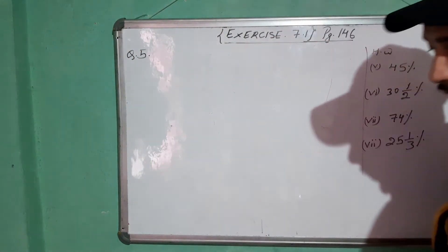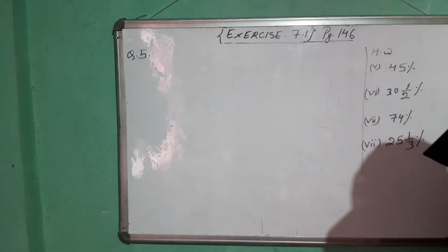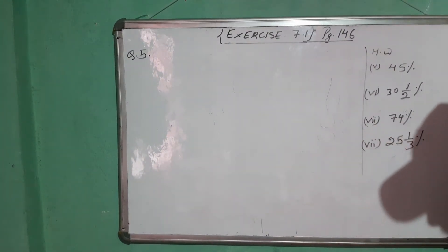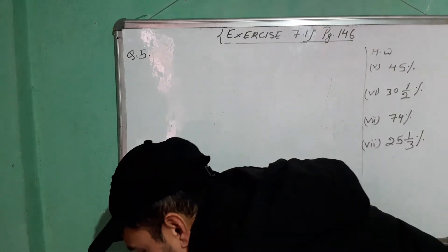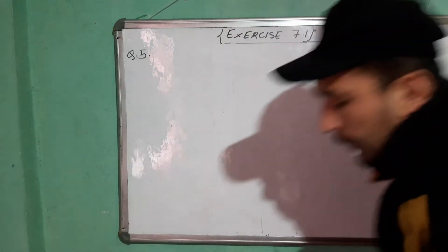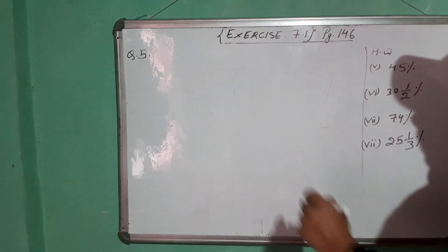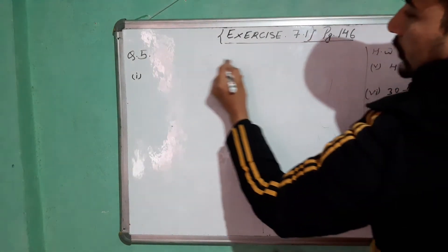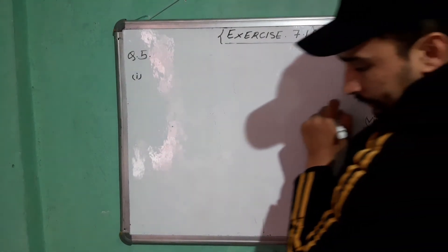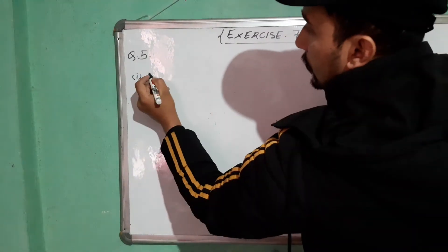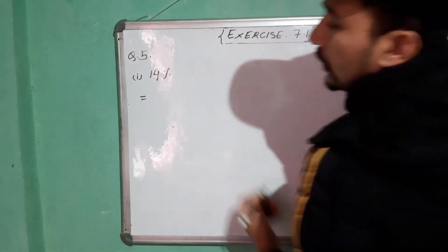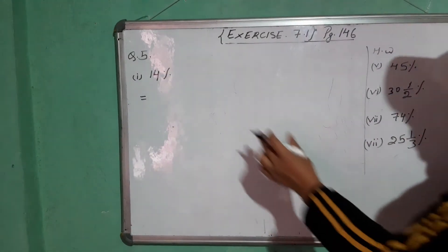Question number 5 says: convert the following percentages into ratios in the simplest form. You have to convert the percentage into ratios. So number 1 — copy the question here. Number 1: 14%, you have to convert this into the simplest ratio.